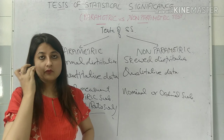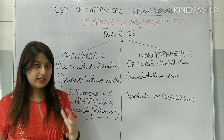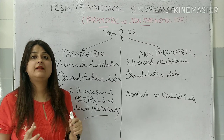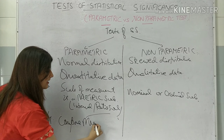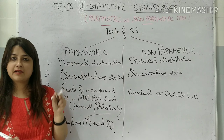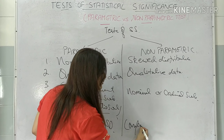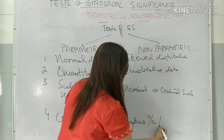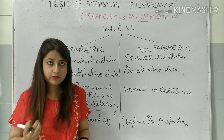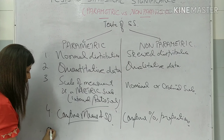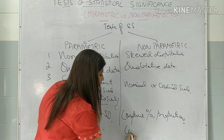Now if you look at these three differences, you might still be thinking you are not clear which test to apply. So there is a very simple way: if in your question you see that you are given means and standard deviations, or if you have to compare means and standard deviations, then straight away apply a parametric test. This is a very important point. And if your question has percentages and proportions, then you have to use a non-parametric test. Parametric tests are also more powerful than non-parametric tests.